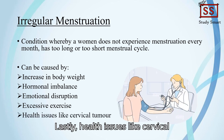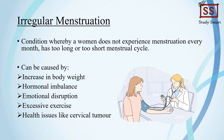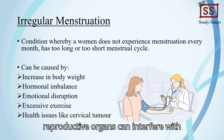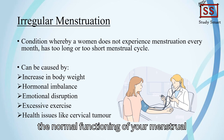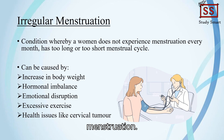Lastly, health issues like cervical tumors can also be a culprit. Tumors or other abnormalities in the reproductive organs can interfere with the normal functioning of the menstrual cycle, causing irregular or skipped menstruation.